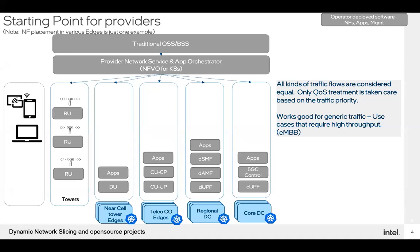At the telco CO, CU-UP and CU-CP might go, and in the regional data centers you would have distributed UPF, SMF, AMF, and possibly PCF. Core data centers host the rest of the control plane 5G functions, in addition to centralized UPF. Since there are multiple CNFs that need to be deployed across multiple types of edges, you tend to have some kind of a network service and app orchestrator across all these blocks, and then on top traditional OSS/BSS. The starting point is essentially one slice — mainly meant for eMBB traffic that typically requires very high throughput.